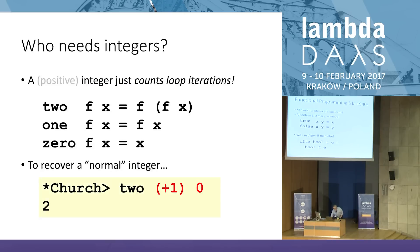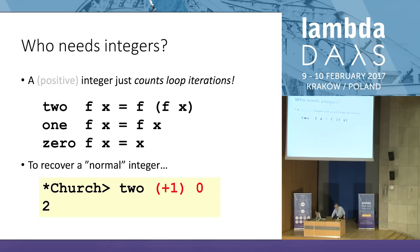What else don't we need? What about numbers? What is an integer for if not counting loop iterations? So let's define 'two' to be a function that takes a loop body f and an initial value x and applies the loop body twice. One applies it once, and zero applies it zero times. So now you see which function represents each positive integer. Can I convert one back to a normal integer? Sure — in Haskell, by calling 'two' and iterating the increment function (plus one) starting from zero. If I increment zero twice, I get two. It really works.